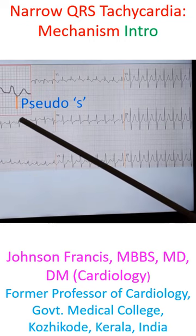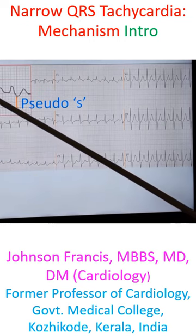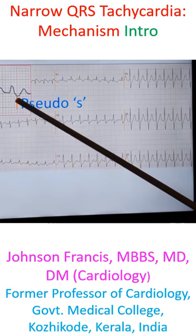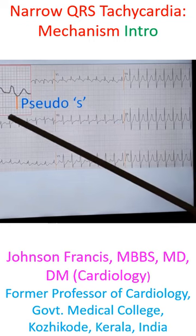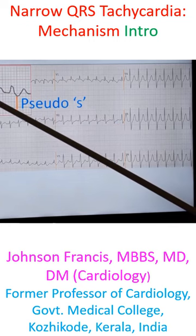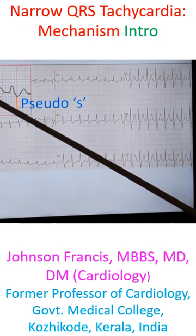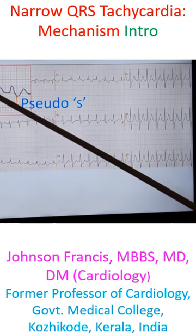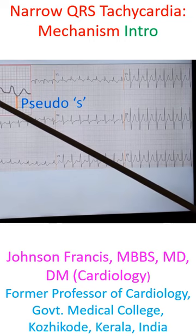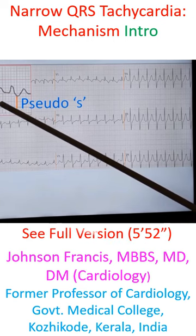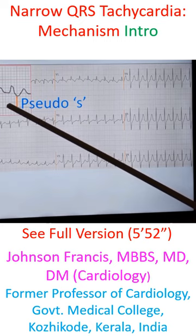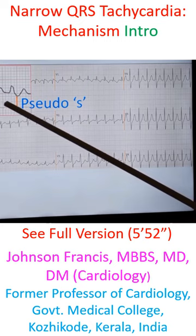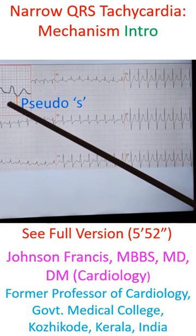In this type of tachycardia when such retrograde P waves are seen — this is an amplified view — they are known as pseudo S waves because they appear like an S wave after the QRS. The R wave is here and this could be called an S wave, but they are very small and not true S waves. They are retrograde P waves which appear negative in this lead.